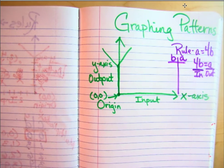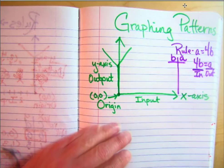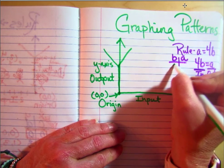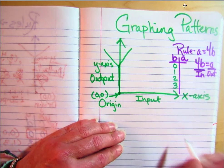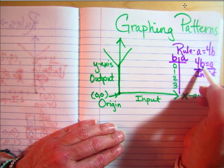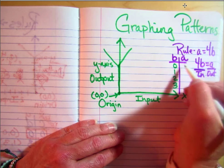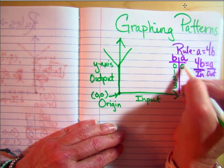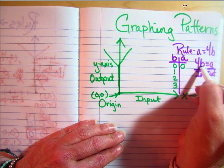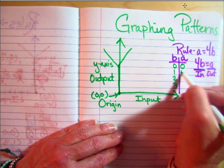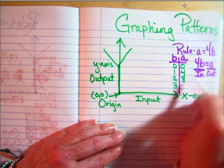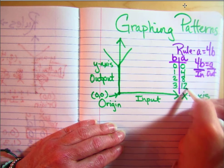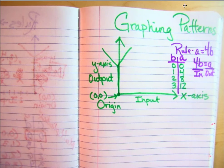If they do not give you coordinates to start with, your easiest ones are 0, 1, 2, 3. If it's a multiplicative pattern, your first one is always going to be 0, 0. Then 1 times 4 is 4, 2 times 4 is 8, 3 times 4 is 12. So then you'll use the lines on the graph.